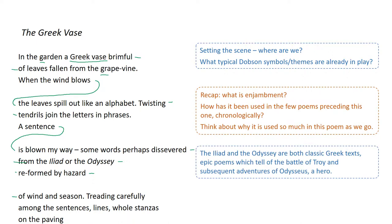When the wind blows the leaves spill out like an alphabet. Twisting tendrils join the letters in phrases. Something is coming back — some sentence, some something is blown my way. Some words perhaps dissevered from the Iliad or the Odyssey, reformed by hazard. The Iliad and the Odyssey are ancient Greek epic poems by an author called Homer — classic Greek texts. Very likely that Dobson would have studied them at school, perhaps along with other myths. The Iliad and the Odyssey tell the story of the Battle of Troy and the subsequent adventures of Odysseus.